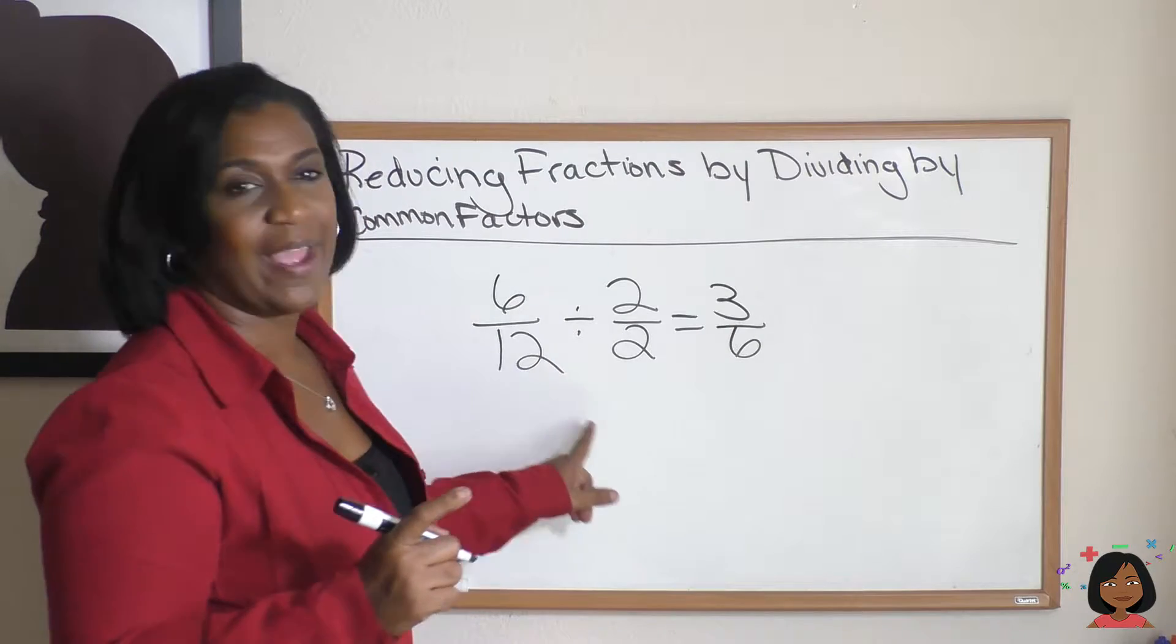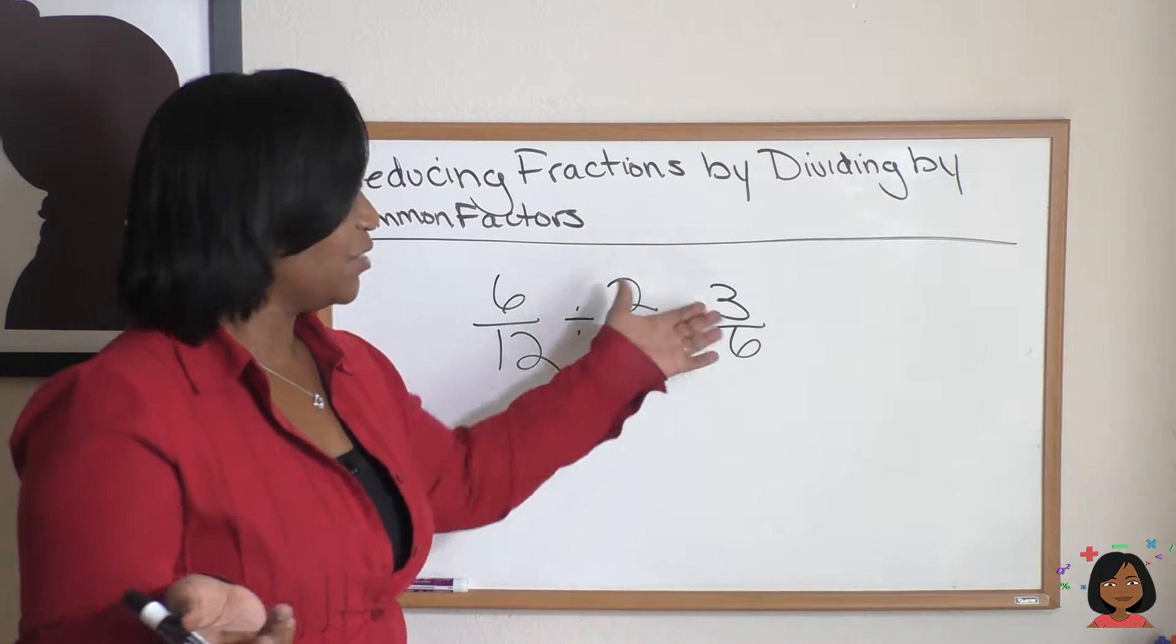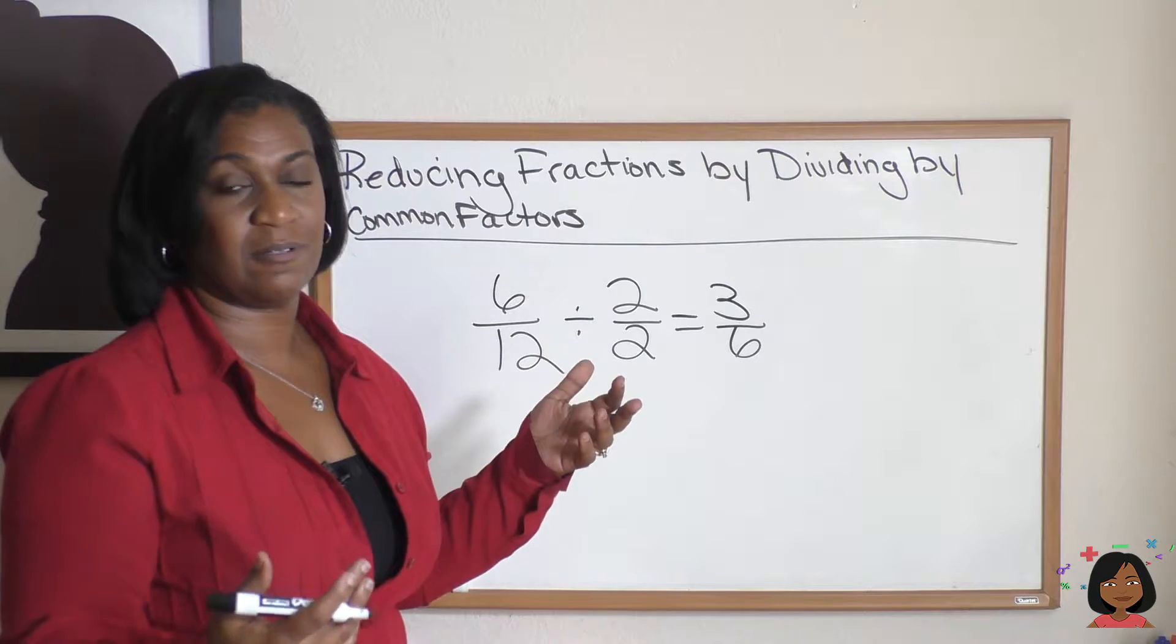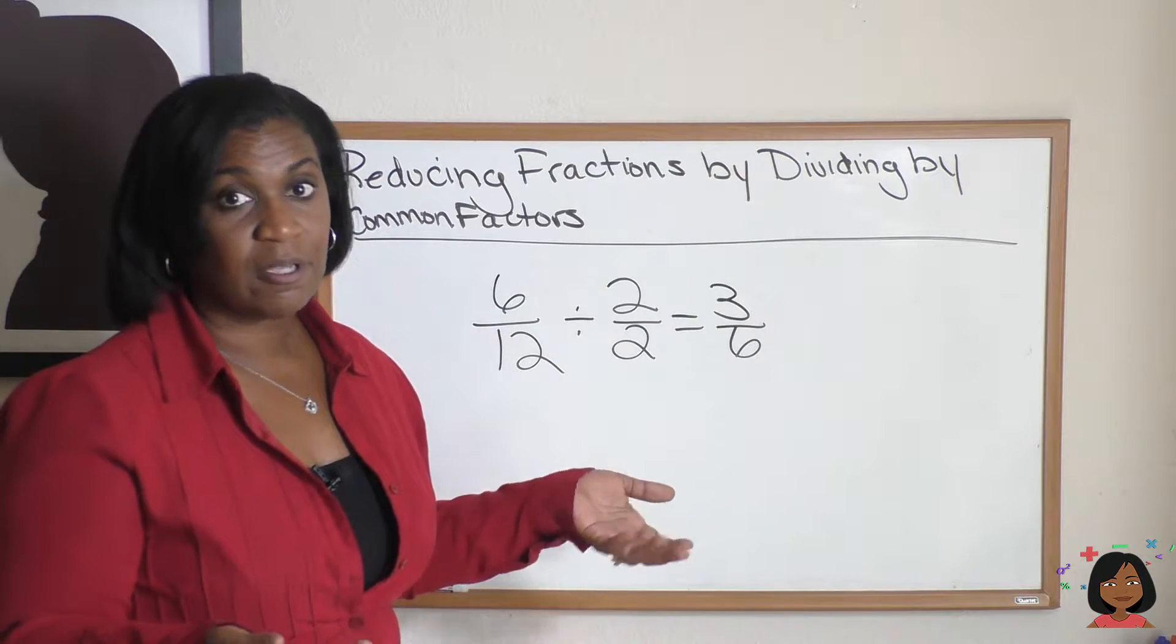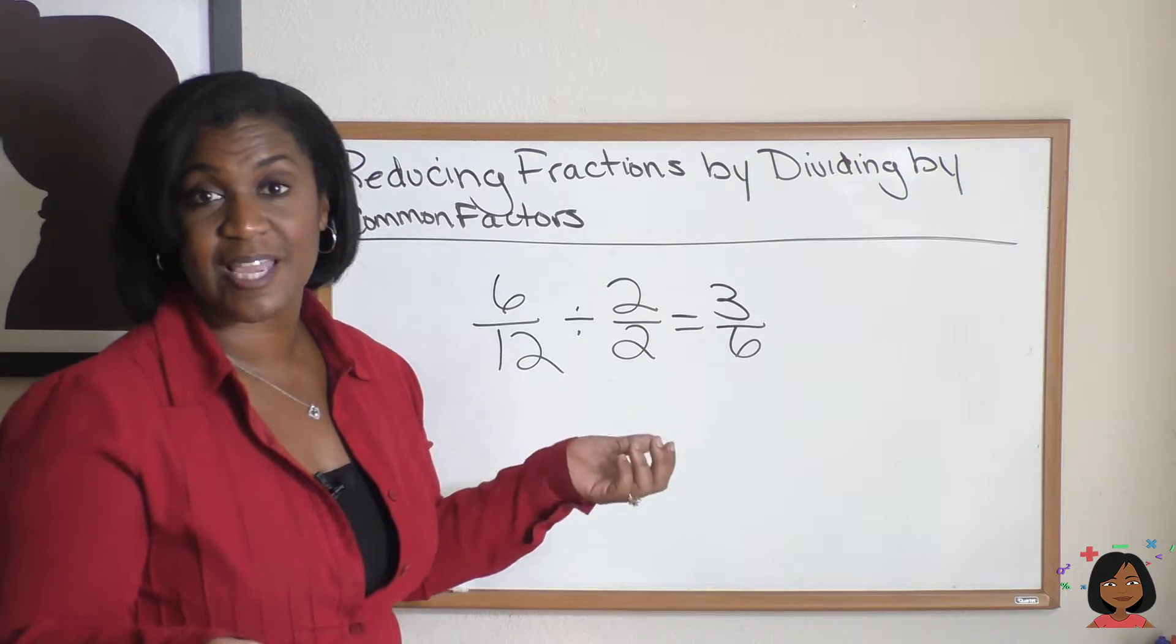Now let's take a look. We tried to simplify it, but are we done? Can 3/6 go a little further? It can. So let's try to find another common factor for both 3 and 6.